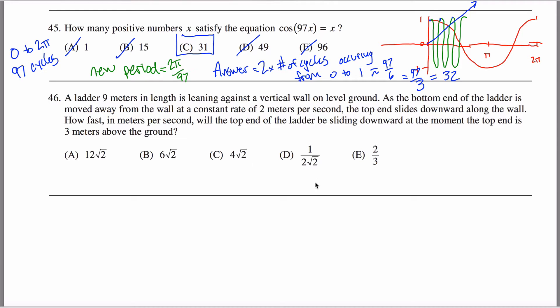45 and 46 aren't too bad relative to some of the others this late in the test. So what's going on is you have a ladder that's leaning against a vertical wall on level ground. In other words, it's kind of a red flag. You're thinking Pythagorean theorem. There's the ground. There's my vertical wall. And I have this ladder.